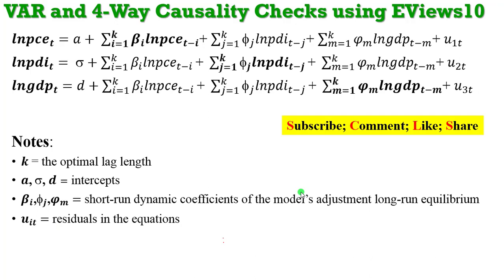On the screen is a specification of a three-variable VAR system, where I have log of PCE, PDI, and GDP. You can see the model neatly spelled out, indicating the respective lags for each variable. Remember, in the VAR system there are no exogenous variables — all variables are endogenous. The K here is the optimal lag length determined from any of the information criteria, such as HQ or AIC. You don't just arbitrarily use lags in a VAR model.